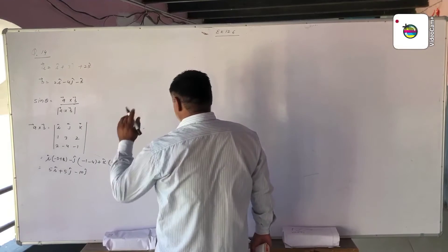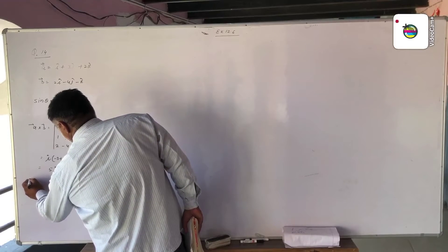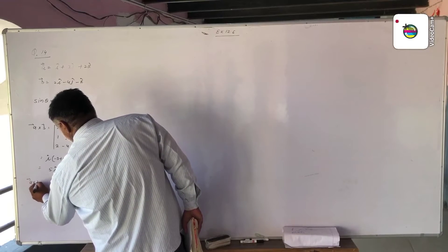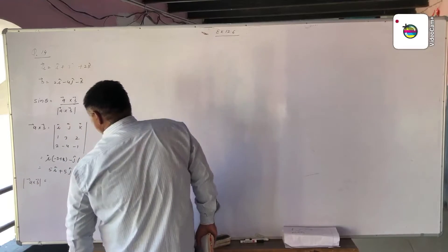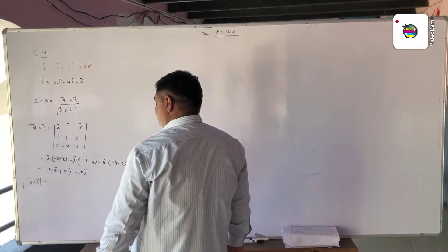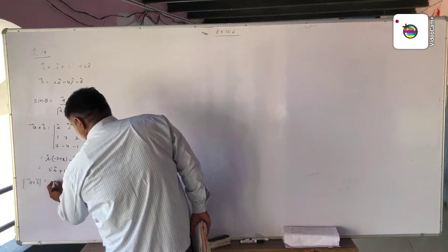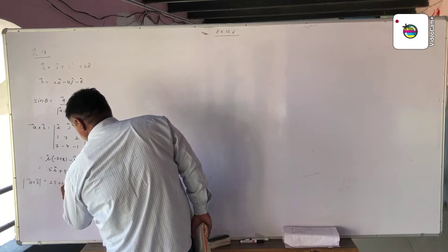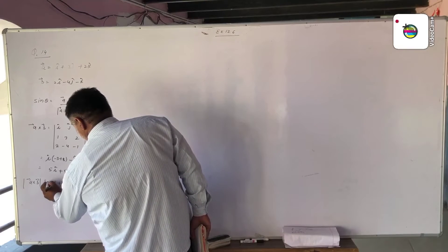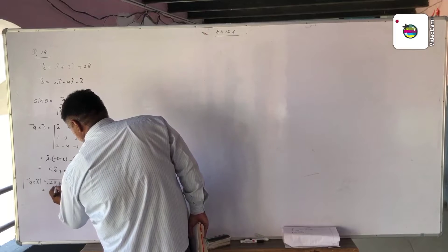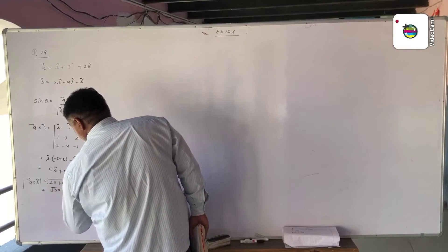Now we find the magnitude of vector A cross B. The magnitude is the square root of 5 squared plus 5 squared plus 10 squared, which gives us 25 plus 25 plus 100, equal to the square root of 150.